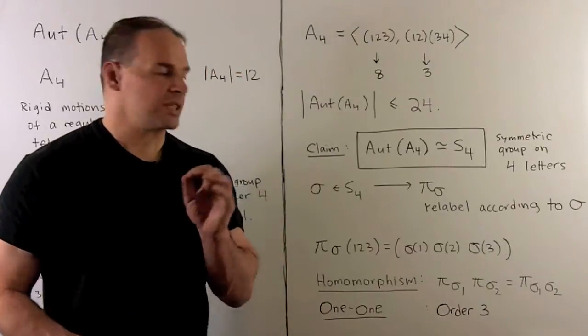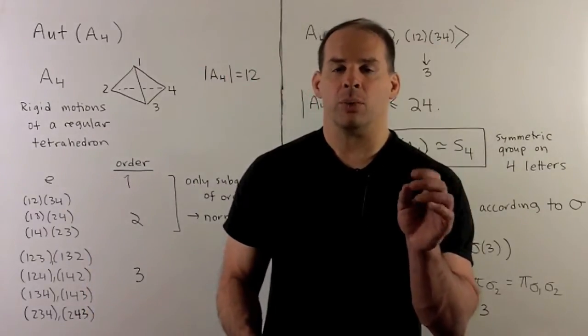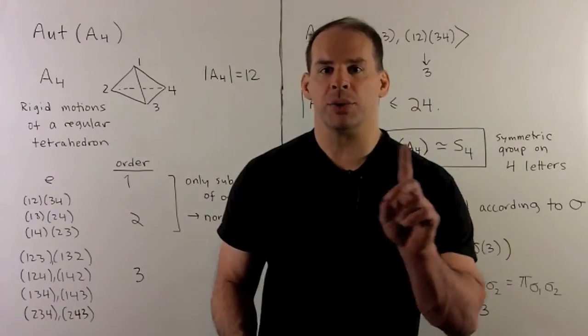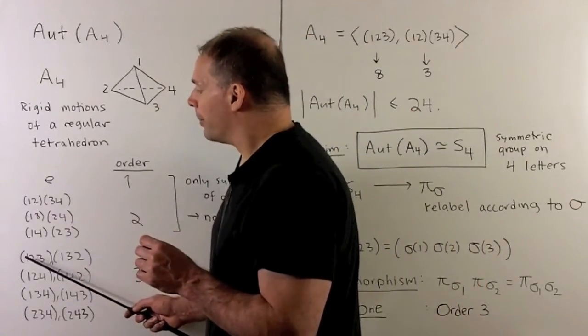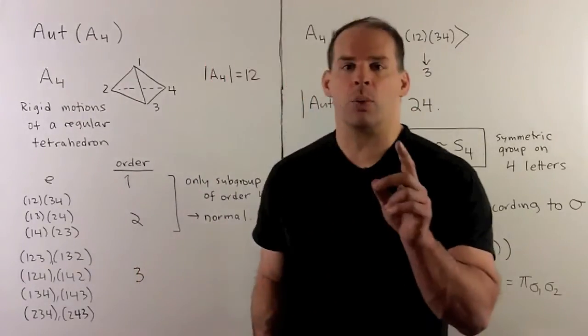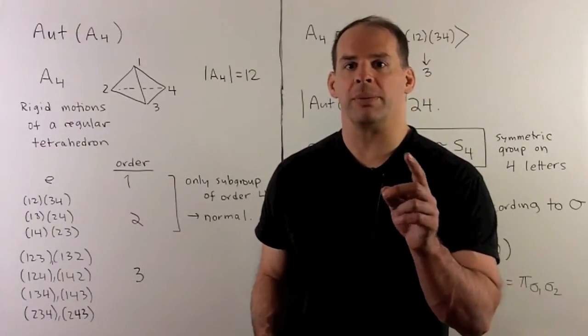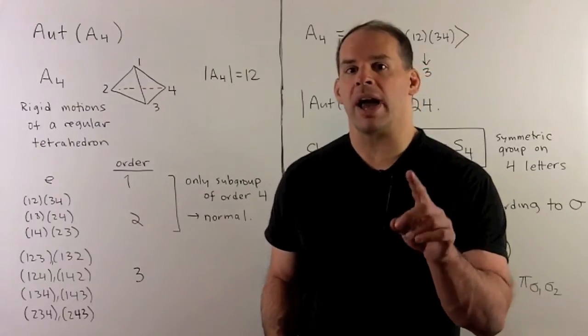Let's consider the elements of order 3. What we're saying is we have some σ that's going to send every element of A4 to itself. If I consider (1,2,3), if that gets sent to itself, doesn't mean 1 goes to 1, 2 goes to 2, 3 goes to 3. We could send 1 to 2, 2 to 3, 3 to 1 and still get that element. But we do know that 4 has to go to 4.